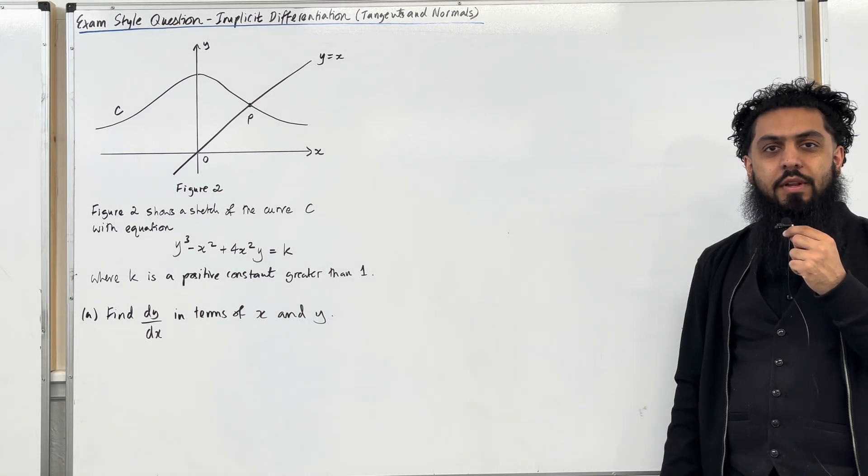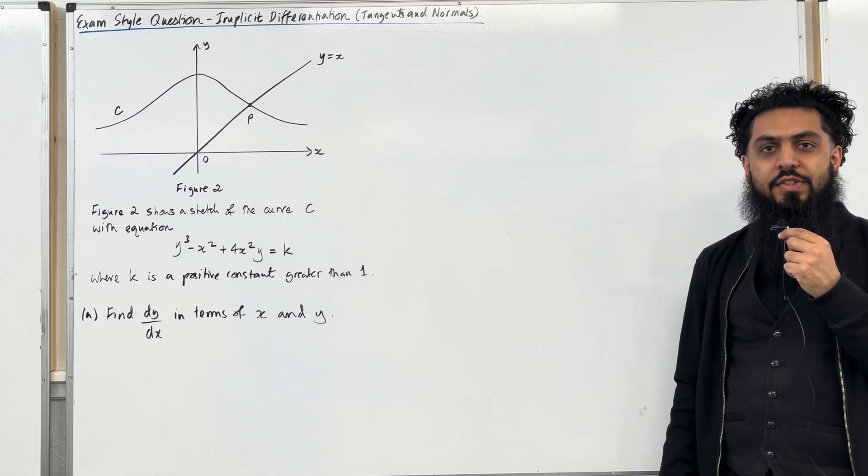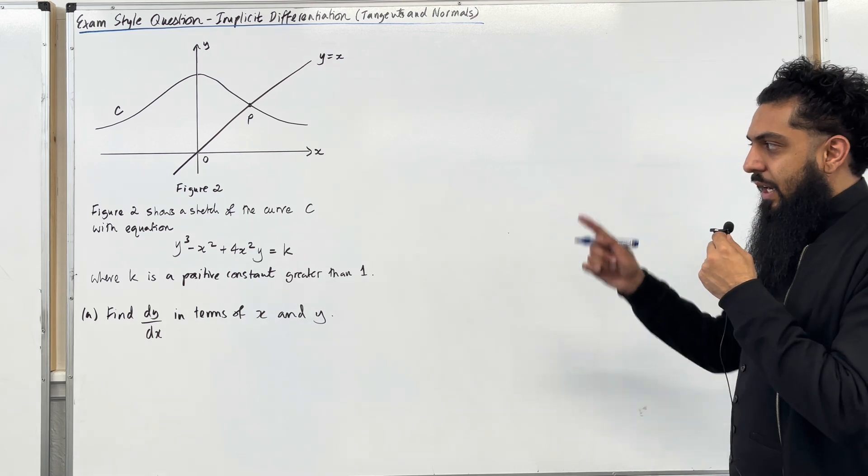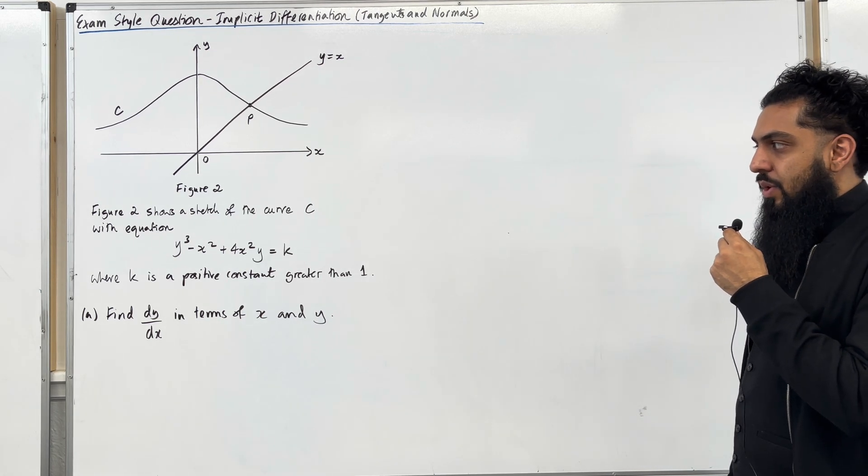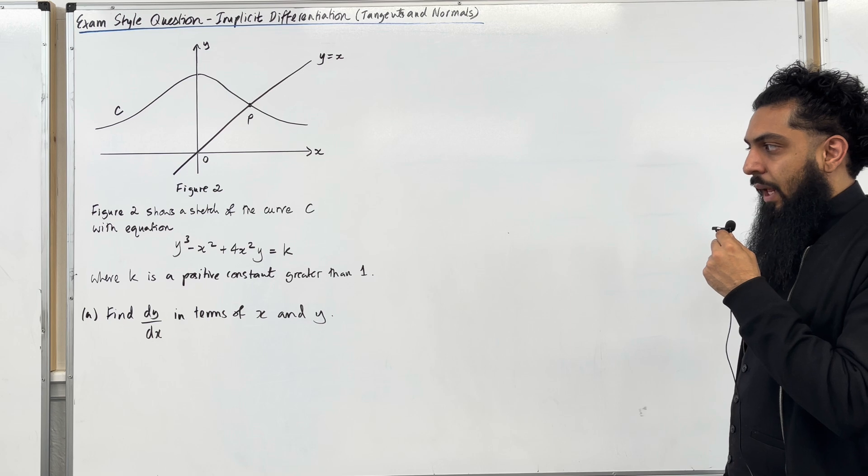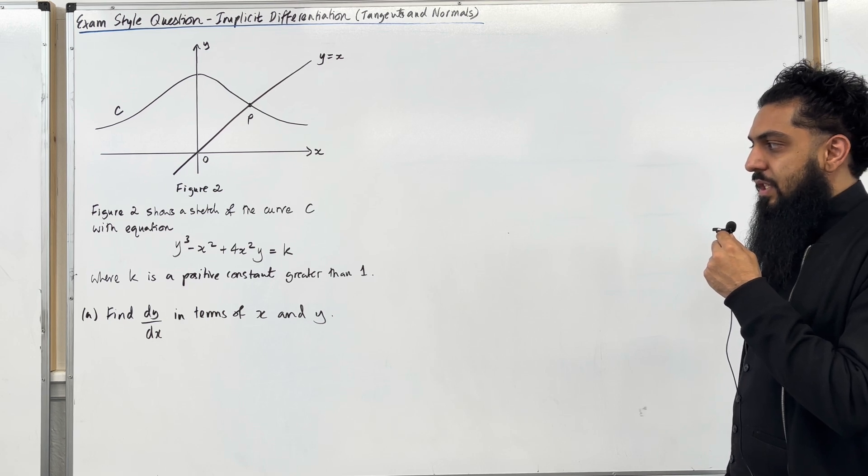Here is an exam study question on implicit differentiation involving tangents and normals. Figure 2 shows a sketch of the curve C with equation y cubed minus x squared plus 4x squared y equal k, where k is a positive constant greater than 1.